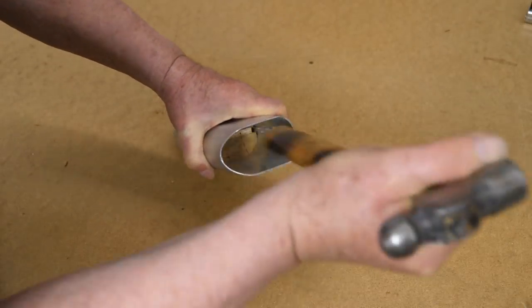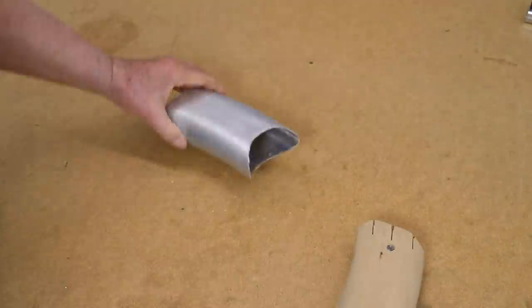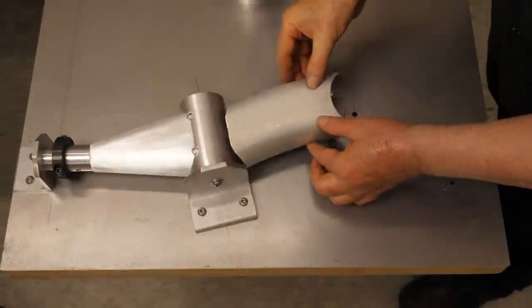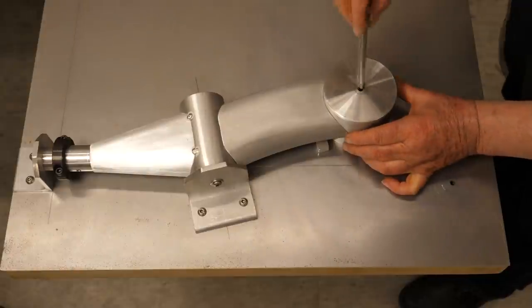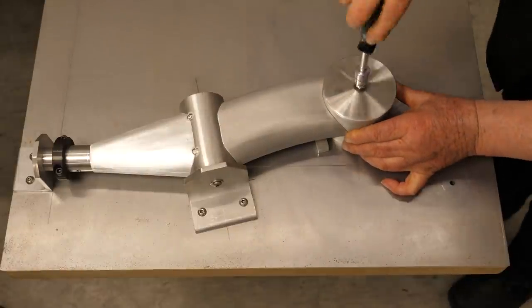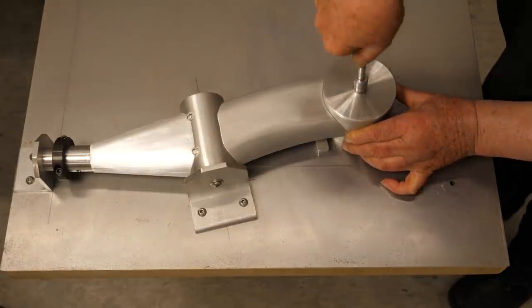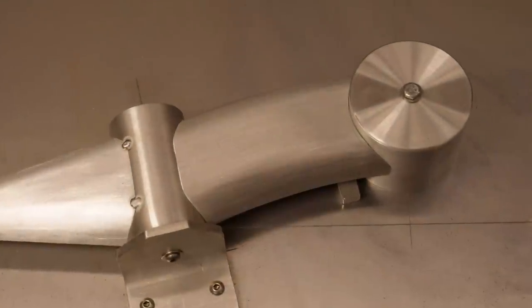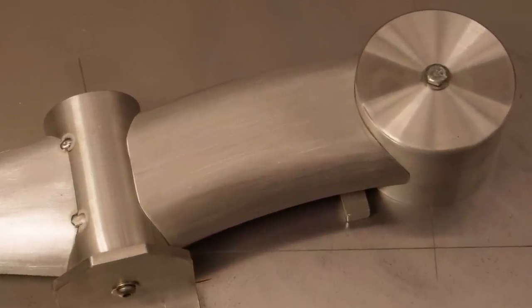The slug is tapped out, the part is deburred, and the fit is checked. Tight fits are essential for good welds on thin sections like this.